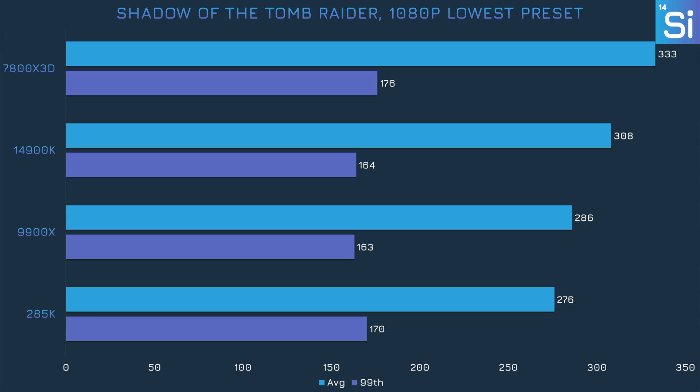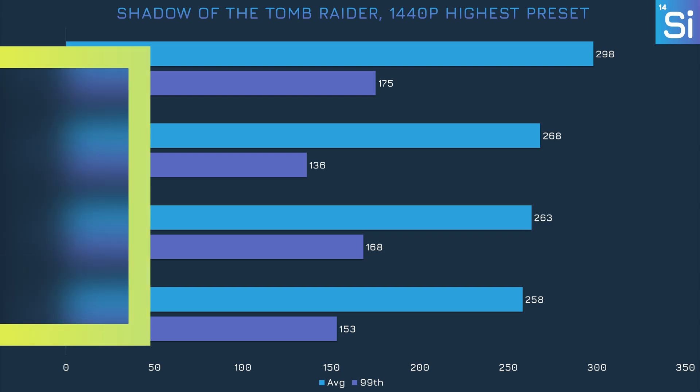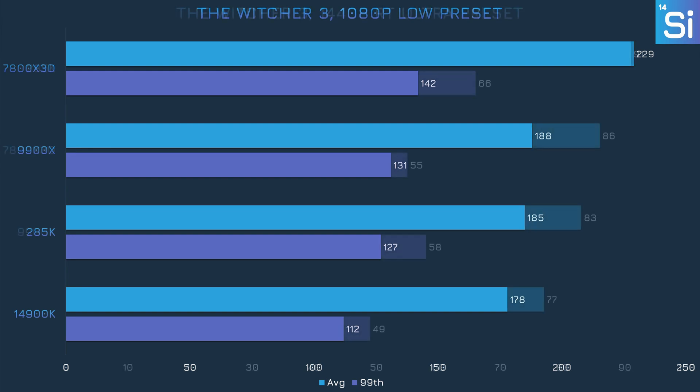Shadow of the Tomb Raider is a good game for the 7800X3D and the 14900K at 1080p with lowest settings, while the 285K and the 9900X ended up last. Not too much changes when graphics settings are increased, but the 285K did manage a pretty good 99th percentile frame rate. Finally, in The Witcher 3 at the low preset, the 7800X3D wins by quite a big margin, while the 285K was faster than the 14900K particularly in the 99th percentile. After switching to the RT Ultra preset, the 285K soars into first ahead of the 7800X3D and retains its good 99th percentile. The 285K shows a decently big improvement over the 14900K, now in last. We test Witcher 3 in Novigrad, and the RT Ultra preset allows for a ton of NPCs, so perhaps the 285K is just really good at handling that sort of workload.